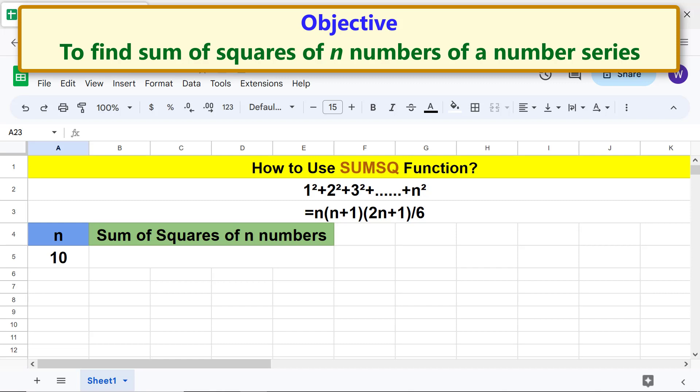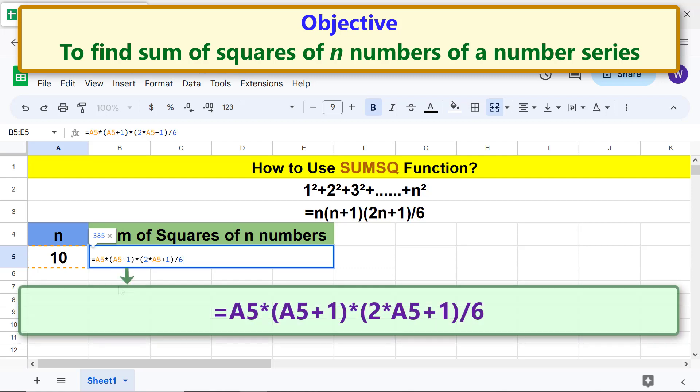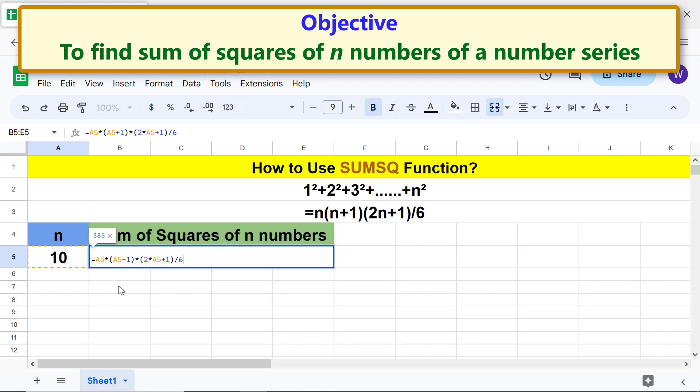Let me substitute 10 for n and construct this formula. The final formula is 10(10+1)(2×10+1)/6. Press enter. All right, here is the sum of squares of n numbers where n equals 10: 385.